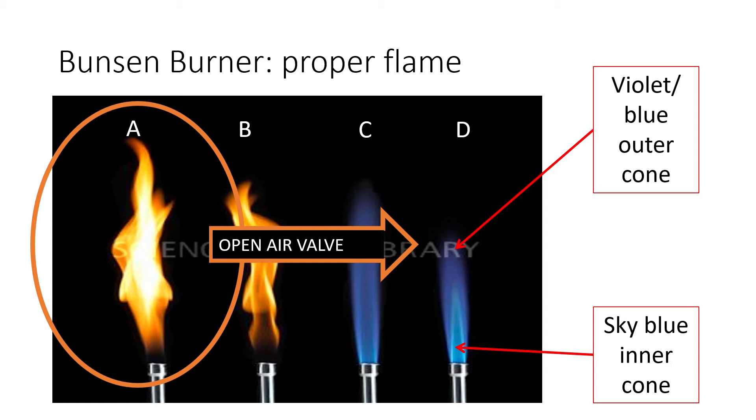The hottest part of the flame is essentially the ring around the tip of that inner sky blue cone. Sometimes the instructions for a procedure will say for you to use a soft flame or a low flame or a cool flame. All these expressions represent that you want the object to be heated to be in contact with that outer cone of the flame, because that is the cooler part of the flame.